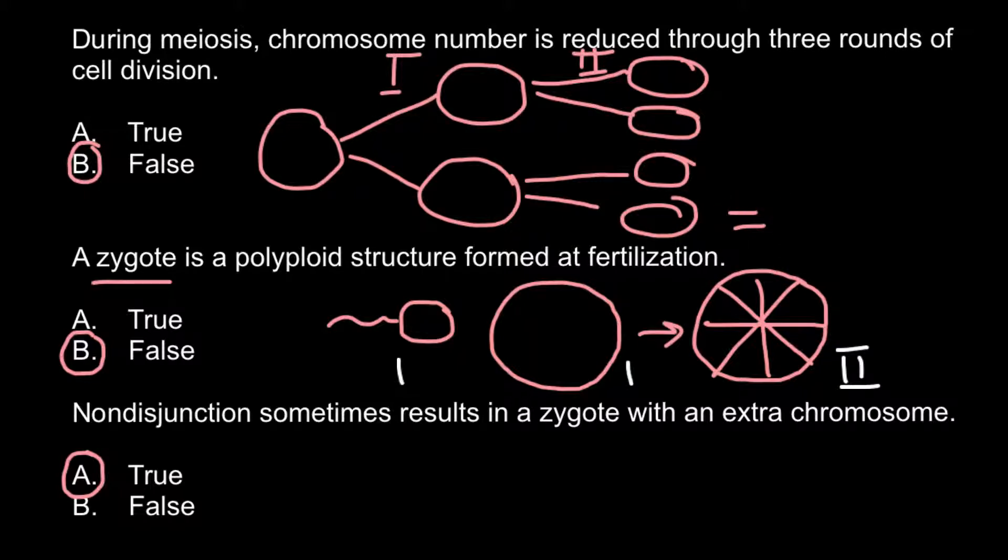But here, for example, this gamete would miss chromosome 21. So here we would have one extra chromosome, here we would miss one chromosome, and a normal number of chromosomes here—23 and 23. Here we would have 22 and 24. Of course, when such a gamete merges with a normal one, we would have one extra chromosome.